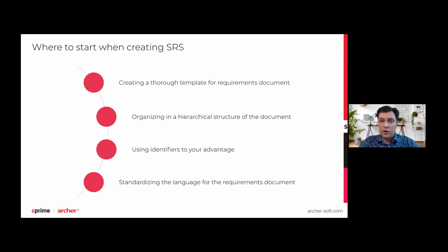A requirement document should have at least a cover page, a heading section, essential guidelines for the content in each section, and a brief explanation of the version change management system used to control changes made to the document. Archer Software has a good template that has been tested by many projects and validated through time. A good template will be a good-looking skeleton for your software requirement specification. We will look later at what a possible template may consist of. The second element is the hierarchical structure of the document.